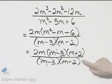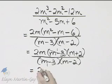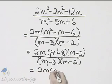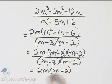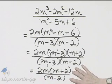These are not the same, nor are they opposites of each other, so let's write down what I have. In the numerator, I have 2m times m plus 2. In the denominator, I have m minus 2, and I am completely simplified.